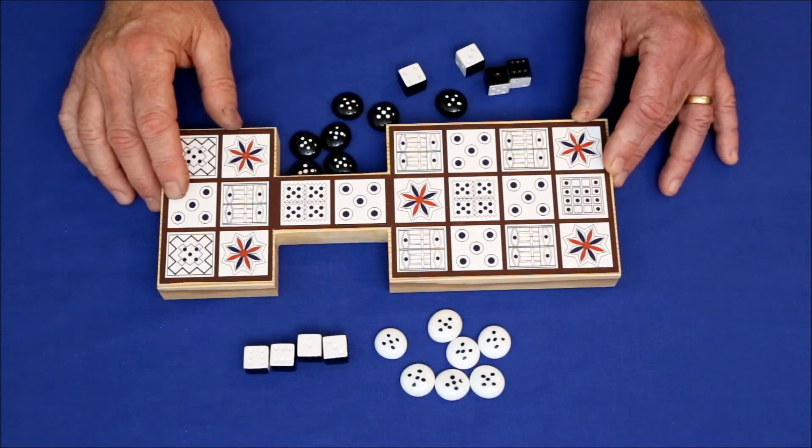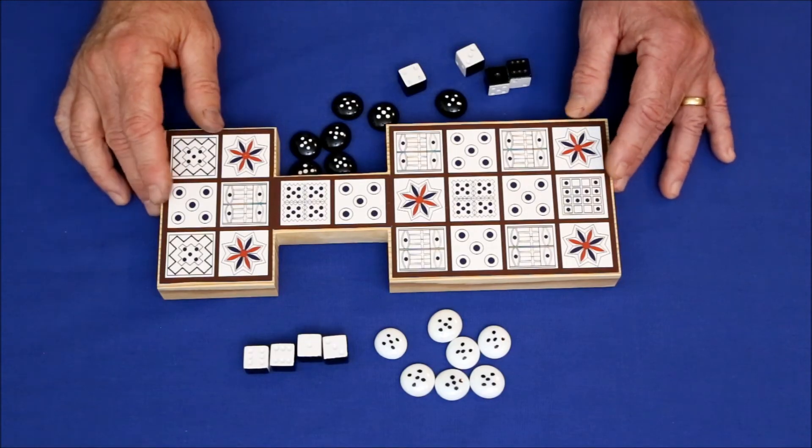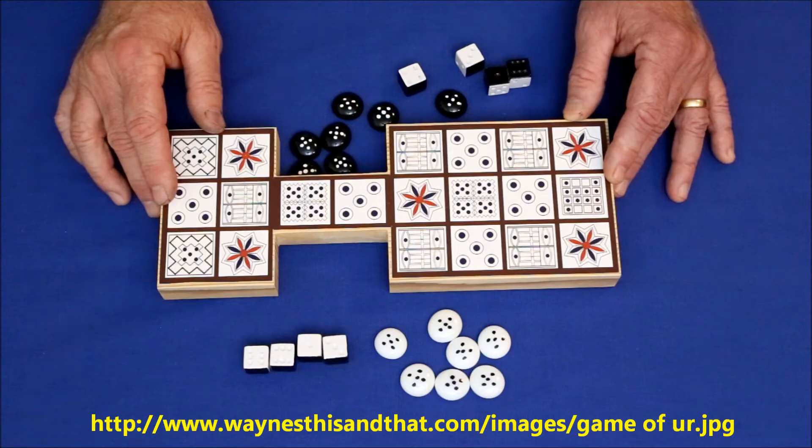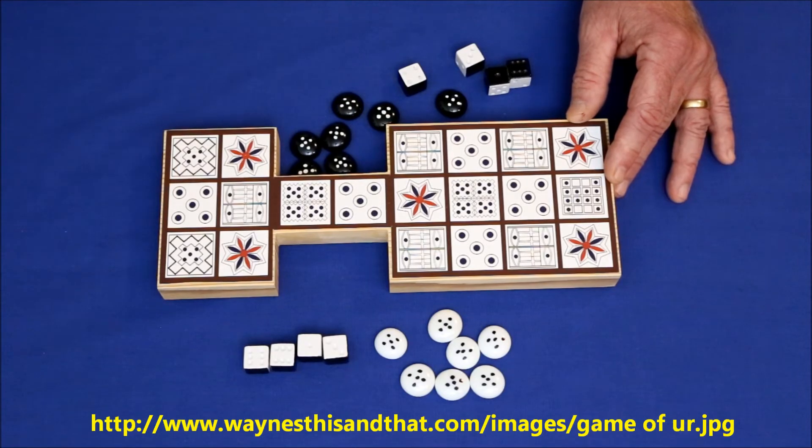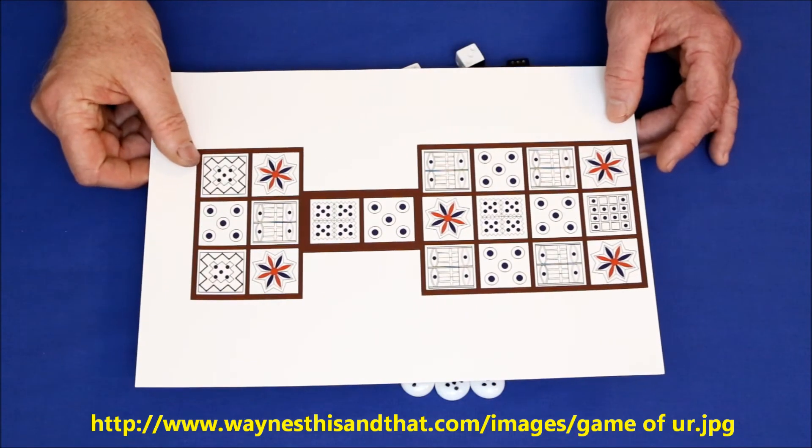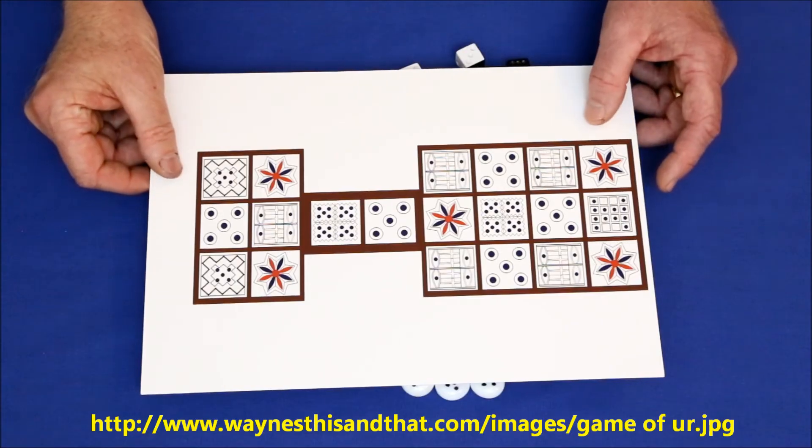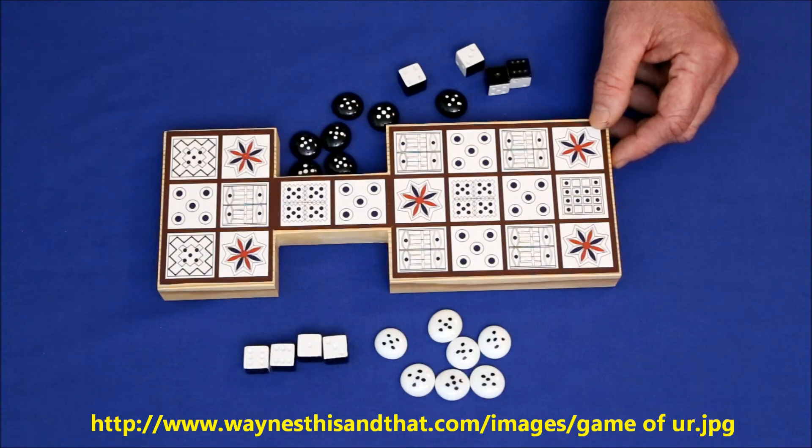Use the link on the screen to open an image file of the game board. Size it to fit your paper and printer and print it out. This can be played on as is, glued to a piece of cardboard or preferably attached to a piece of wood.